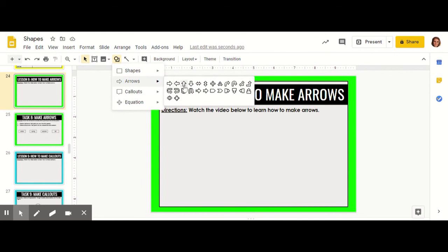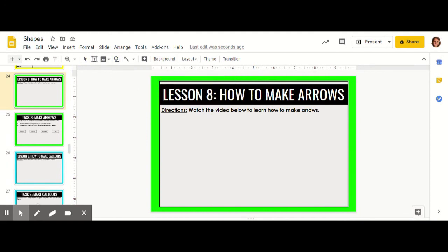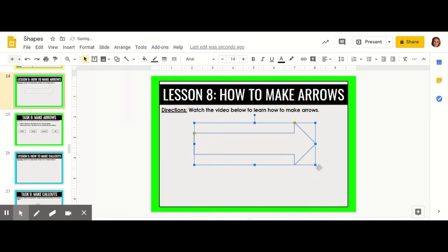There are all the different types of arrows that you can choose. Once you find the arrow that you like, click on it, then click and drag the arrow to make it the size that you'd like.